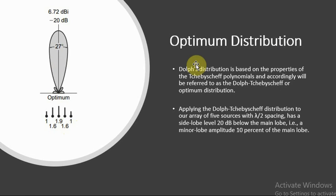Now I would like to conclude with the key points by comparing all four distributions we discussed today. When we use binomial distribution, minor lobes can be eliminated, and on the other hand, the distribution has maximum amplitude at the center of the array.